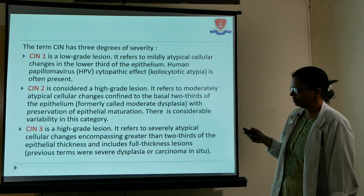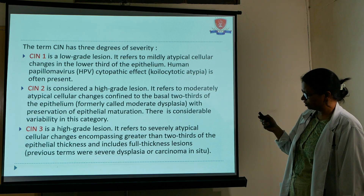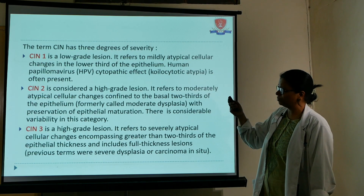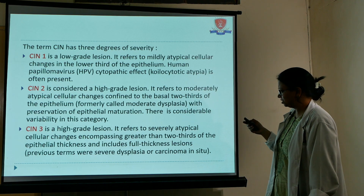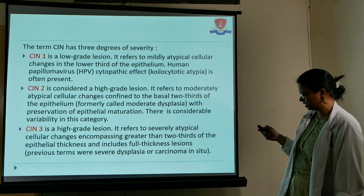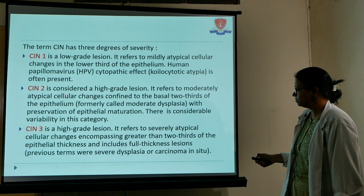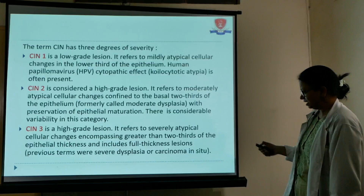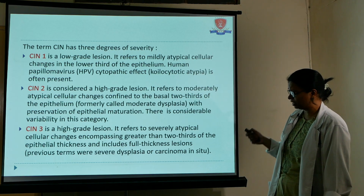CIN-2 is when around two thirds of the epithelium is affected. There is always confusion in diagnosing CIN-2 — it can become either CIN-1 or CIN-3. It is considered a high-grade lesion referring to moderately atypical cellular changes confined to the basal two thirds of the epithelium, formerly called moderate dysplasia. There is considerable variability in this category, and markers can differentiate it into CIN-1 and CIN-3.